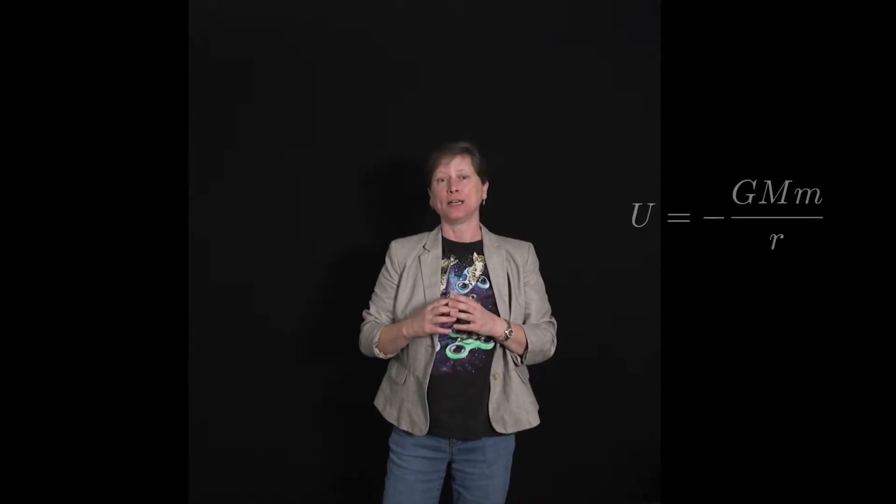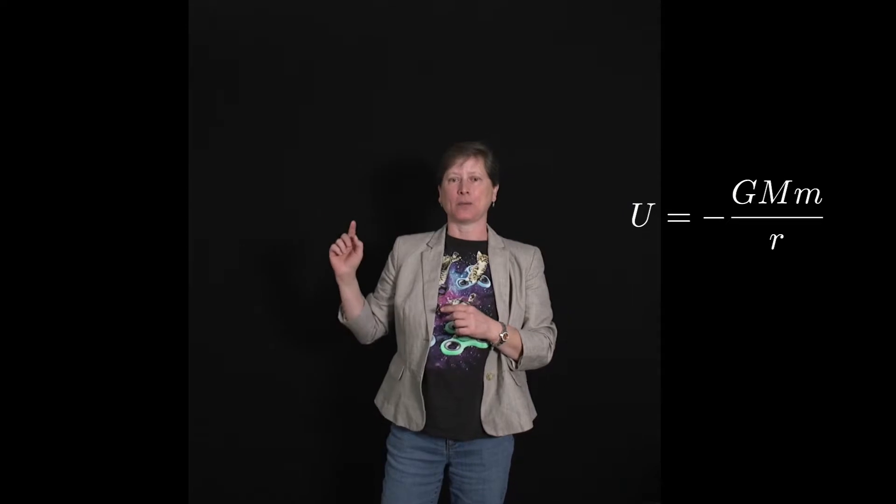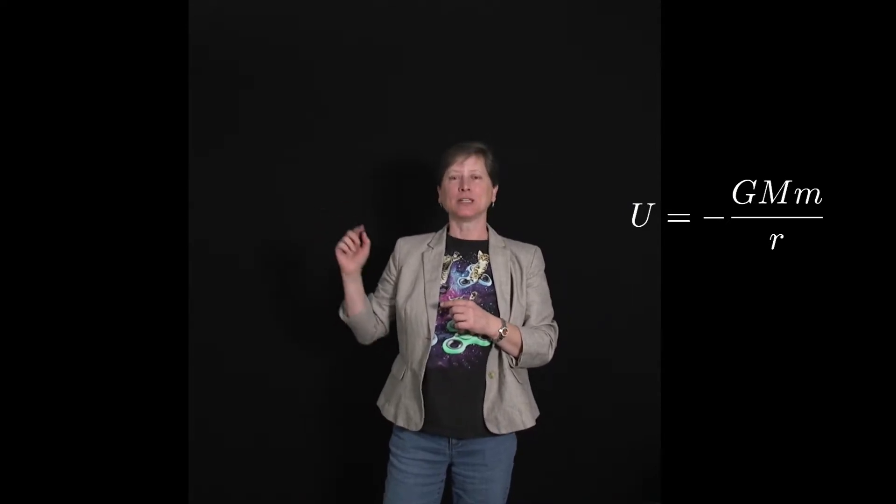The general expression for the gravitational potential energy of anything interacting with anything else still depends on the two masses and their separation, just as MGH does, and it accounts for the definition of the zero point at infinity. So officially, the potential energy U is negative G times M times m divided by R.